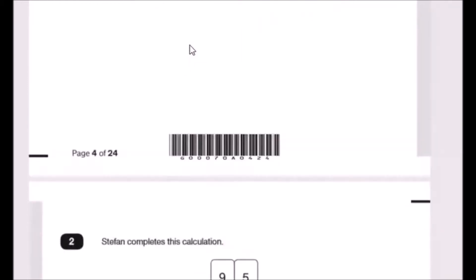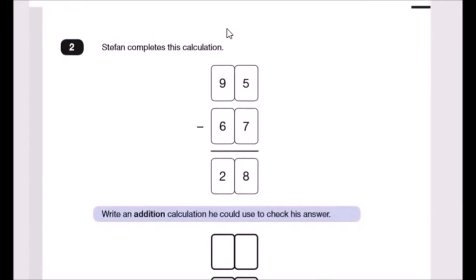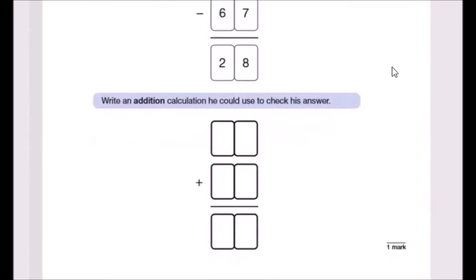Now number two. So Stefan completes this calculation. Okay, so we've got 95 take away 67 is 28. So write an addition calculation he could use to check his answer.